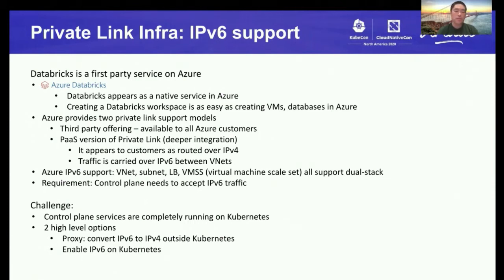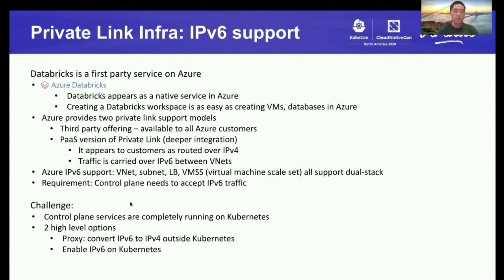From the Azure side, they do have IPv6 support on most of their resources — virtual networks, subnets, load balancers, and VMSS (virtual machine scale sets). These resources all support dual stack, meaning you can assign both IPv4 and IPv6 to them at the same time. The challenge for us is really our control plane, which is completely running on top of Kubernetes, which is purely IPv4. But the PrivateLink traffic comes in as IPv6. So we have to accept IPv6 traffic to our Kubernetes services.